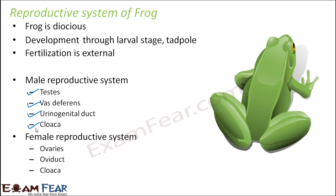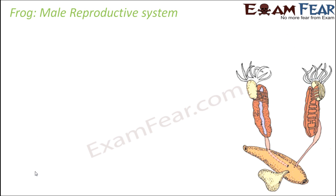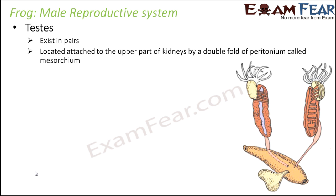The female reproductive system consists of ovaries, oviduct, and cloaca. Now we will talk about the male and female reproductive systems one by one. Starting with the testes: they exist in pairs and produce sperms. They are located attached to the upper part of the kidneys by a double fold of peritoneum.